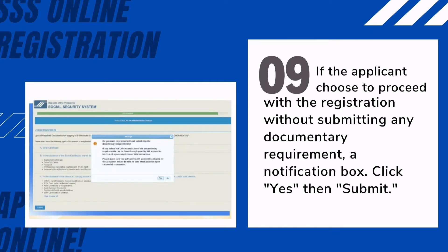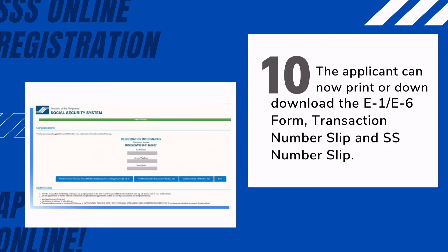Ninth, if the applicant chooses to proceed with the registration without submitting any documentary requirement, a notification box will appear informing the member that the submission of documents may be done through the My SSS account, which will be created after securing an SS number. Click Yes, then Submit.